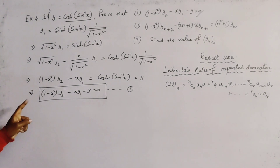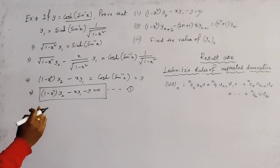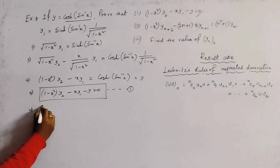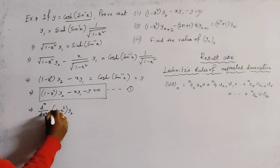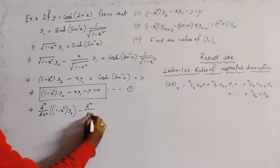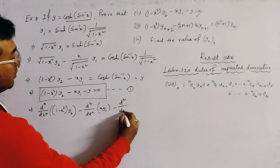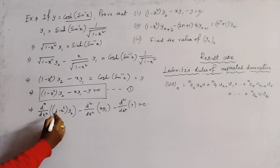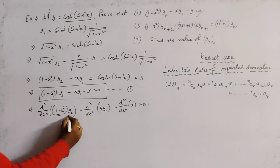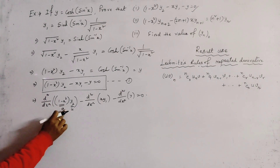Now we use the Leibniz rule of repeated derivatives. We take the nth-order derivative of both sides of relation 1, giving: dⁿ/dxⁿ [(1 minus x squared)·y₂] minus dⁿ/dxⁿ [x·y₁] minus dⁿ/dxⁿ [y] equals 0. Here we choose (1 minus x squared) as the first function u and y₂ as the second function v, and similarly for the other terms.